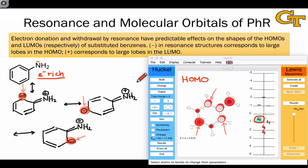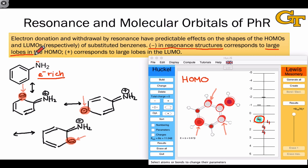The general point here is that negative charge in resonance structures of benzene substituted with electron donating groups corresponds to large lobes in the highest occupied molecular orbital and sites of strong nucleophilic behavior. It's not a coincidence that the resonance structures and the shape of the HOMO are telling us the same thing.